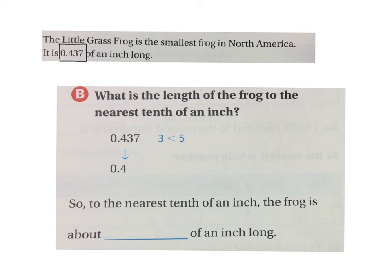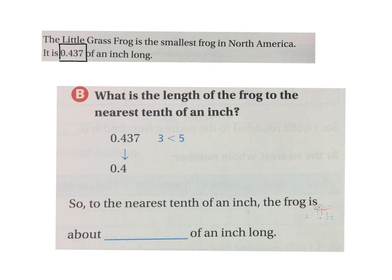Now it's asking us to round to the nearest tenth of an inch. We still have the same number: 0.437. Write it on a place value chart. We're rounding to the tenths position — the digit there is 4, so circle it. Our two answer choices are 0.4 or 0.5. The digit directly to the right of the circled digit is 3 — underline it. Is three five or more? No. So 0.437 is closer to four tenths. To the nearest tenth of an inch, the frog is about 0.4 inches long.